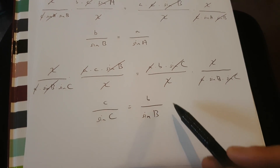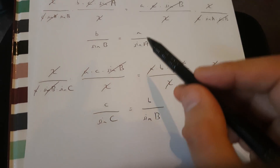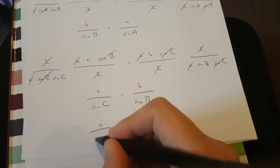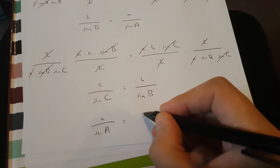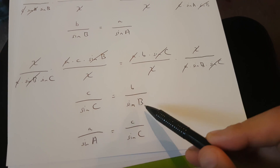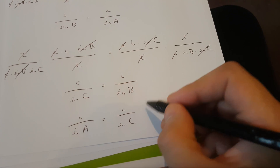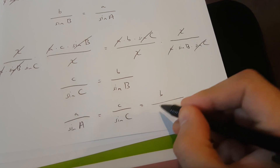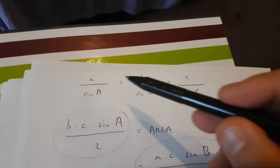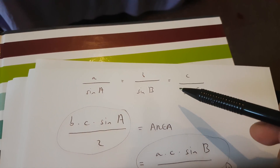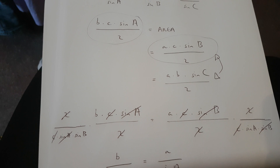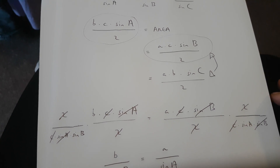Since these two are equivalent to one another, it means that b over sin(B) is equal to c over sin(C). And since we already showed a over sin(A) equals b over sin(B), we've now fully proven that a over sin(A) equals b over sin(B), which is equal to c over sin(C). Thank you for watching this video — if you have any questions, leave them below.